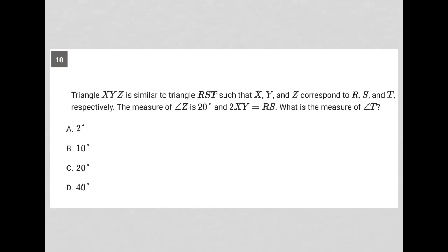This question says triangle XYZ is similar to triangle RST such that X, Y, and Z correspond to R, S, and T respectively. I'm going to use a strategy: plug-in picture. I'm going to draw two triangles.